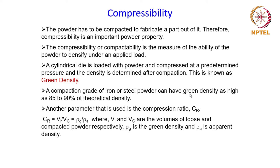The other property of the powder important for the compaction process is compressibility. The powder metallurgy process basically consists of compacting the powder into a particular shape and then consolidating and densifying it to obtain the final fully dense product. How good the compactability is will be given by this property known as compressibility. Compressibility or compactability is the measure of the ability of the powder to densify under an applied load.